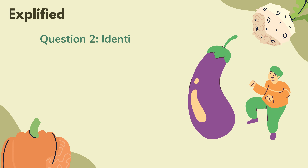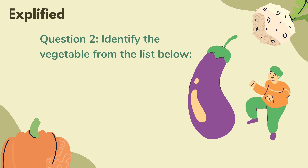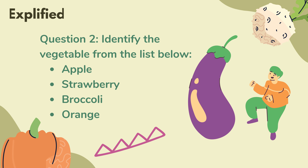Question 2: Identify the vegetable from the list below. Apple, strawberry, broccoli, orange.